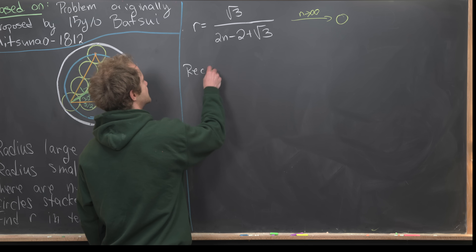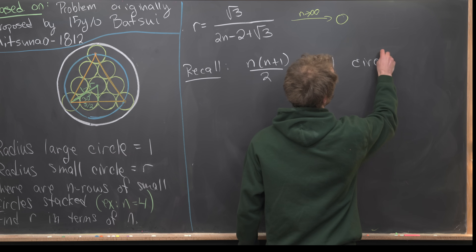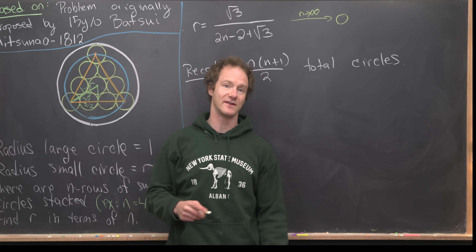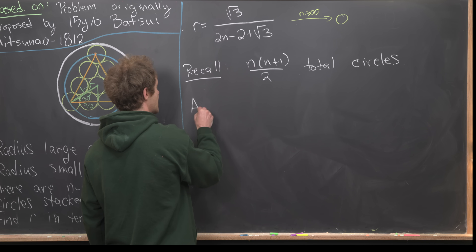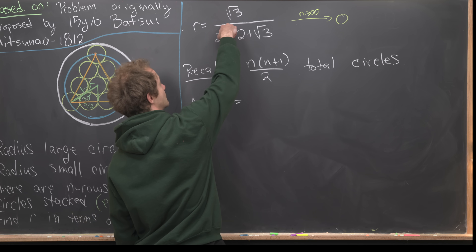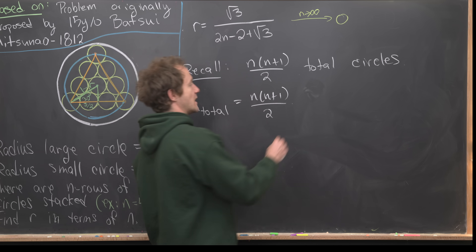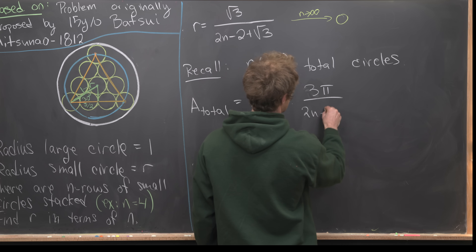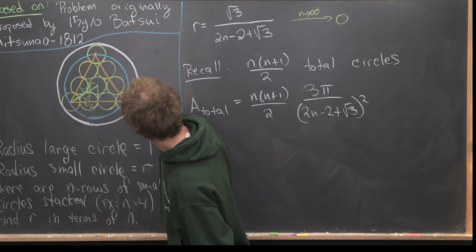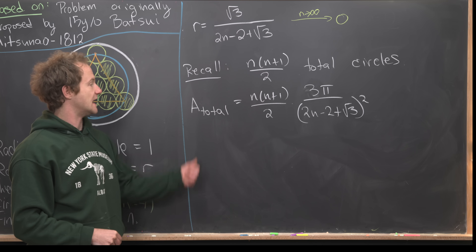First, recall there are n(n+1)/2 total small circles, because we have a triangular number: 1 plus 2 plus 3 plus 4 all the way to n. So the total area of all the small circles is the number of circles times π r². Writing it out, that gives us 3π / (2n minus 2 plus √3) squared. What we're calculating is the total shaded area of all the yellow circles in terms of n.